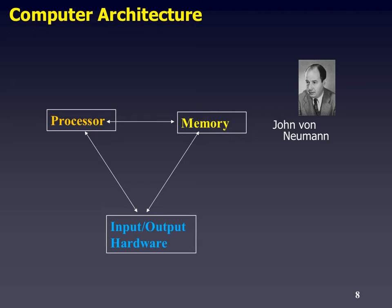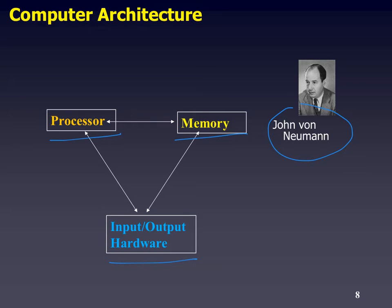Unfortunately, nobody could get a really scalable, working computer until the late 1940s, when John von Neumann — just after World War II — developed an architecture called the von Neumann architecture. It's quite simple: you have a processor, memory, and some input-output. It seems fairly obvious nowadays, but it wasn't obvious in those days.